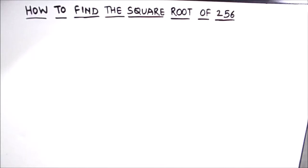Hello students! In this video we are going to learn how to find the square root of 256 using the prime factorization method. In this method we divide the number using prime numbers and find the factors of the number, and by taking the square root of the product of factors we can find the square root of the number.